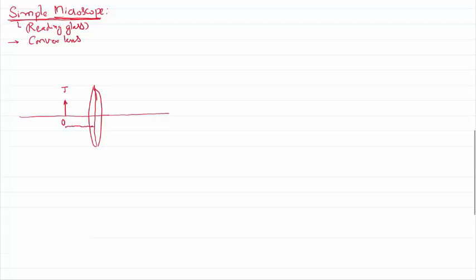All distances are measured from the center of the lens. The object distance is u, measured against the direction of the light, so as per the sign convention it becomes negative. Light in the given scenario is falling from left to right. As I want a magnified erect image, the object location shall be within the focal length, that is within the principal focus. Let us assume the object is kept within the principal focus and see how the image is formed.